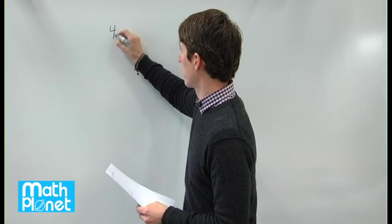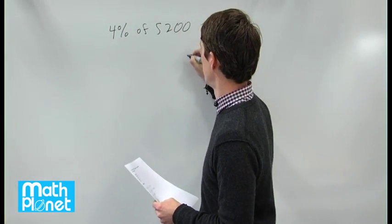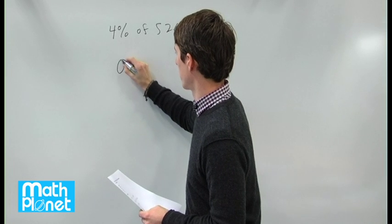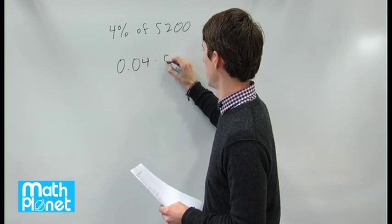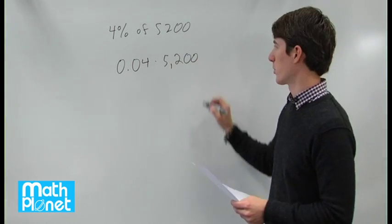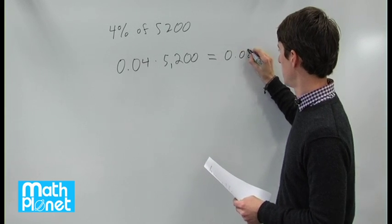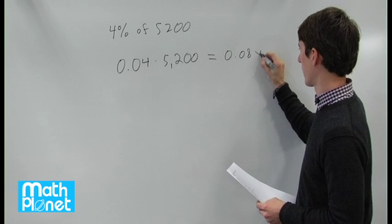So if we have 4% of 5,200, that's the same as 0.04 times 5,200. We can set that equal to 8% of our new number, our variable, x.